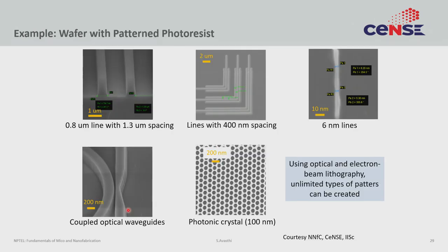Using optical light, we can achieve resolution down to 200-300 nanometers in extreme cases. At Intel, people have gone down to 22 nanometers. In our facility at IISc, using optical light, we go down to about 1 to 1.3 microns. For smaller features, we start using electrons — using electron beams you get better resolution and can go down to about 6 nanometers. Commercial fabs can do even better.